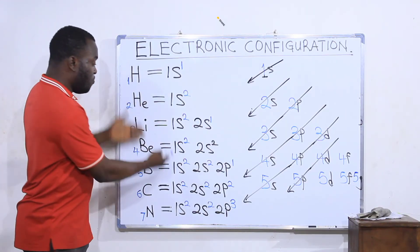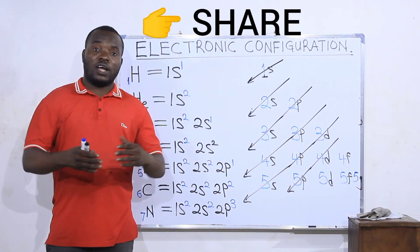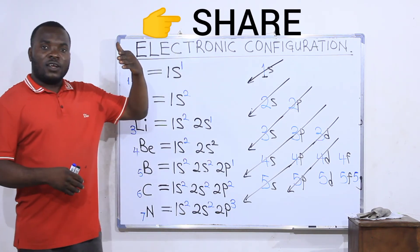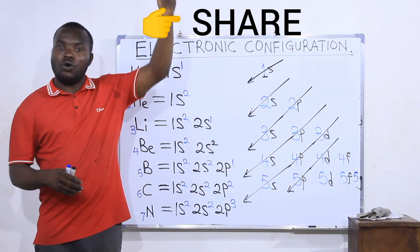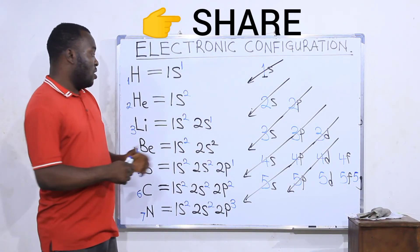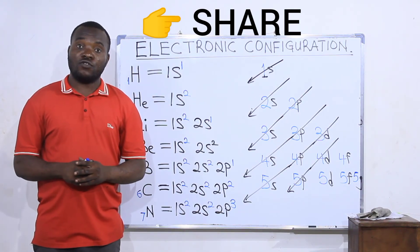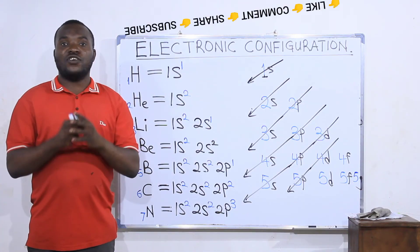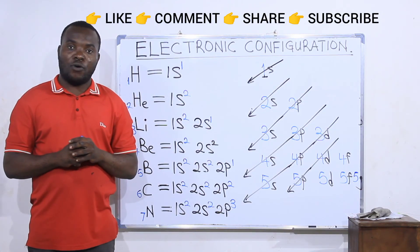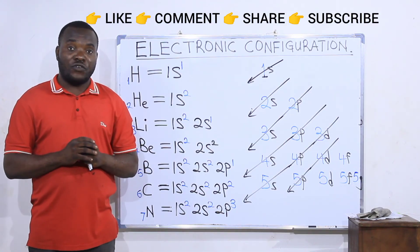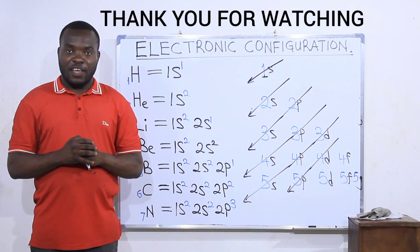These are the simpler electronic configurations. In the next video we are going to look at higher atoms like calcium, scandium, titanium, and iron — the bigger elements. Please click the next video to see how to write configurations for bigger elements. Thank you for watching; please like, share, and subscribe to the channel.